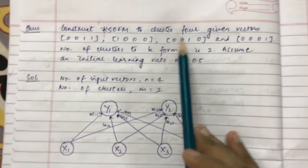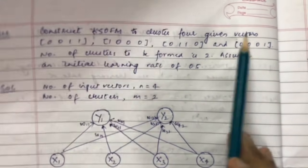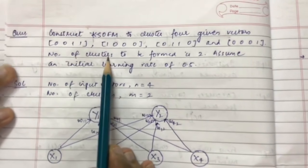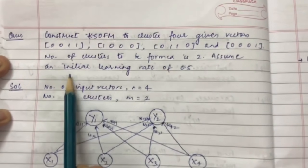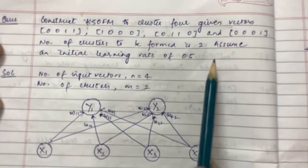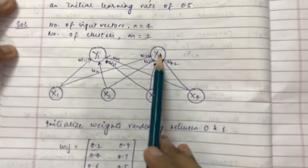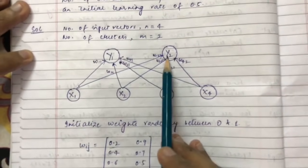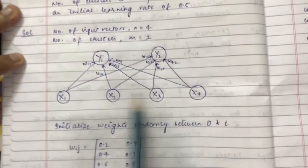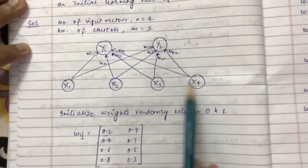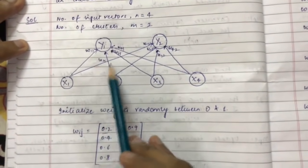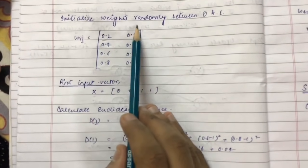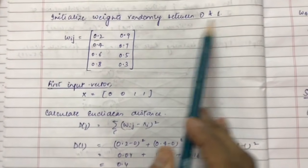Construct a K-SOM to cluster four given vectors. We have been given four vectors and the number of clusters to be formed is two. Assume an initial learning rate of 0.5. We will make two clusters y1 and y2, and four input vectors x1, x2, x3, x4, all connected with the clusters.